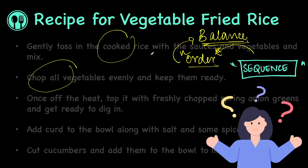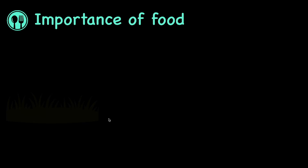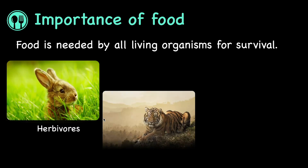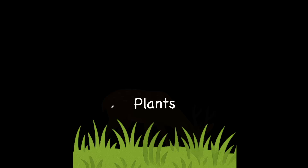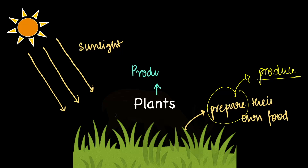So what is this order that maintains balance in nature? Well, to understand that, we need to look at the importance of food and food habits amongst living organisms. We know that food is essential for survival, and based on eating habits, animals can be categorized as herbivores, carnivores, and omnivores. Herbivores are animals that feed on plants, while carnivores feed on other organisms like herbivores. But what do plants feed on? Green plants use energy from sunlight to prepare their own food — so plants produce their own food. Hence, plants are also referred to as producers.